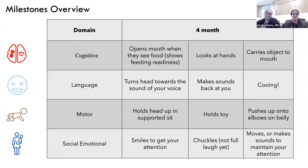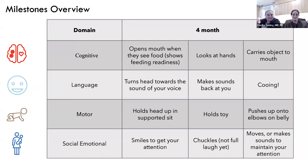Language at four months includes turning heads toward the sound of your voice. Cooing begins around three months — if you say 'hi baby' and wait, they should coo back at you. It's a back-and-forth interaction: you talk, you wait, they respond — lots of fun.